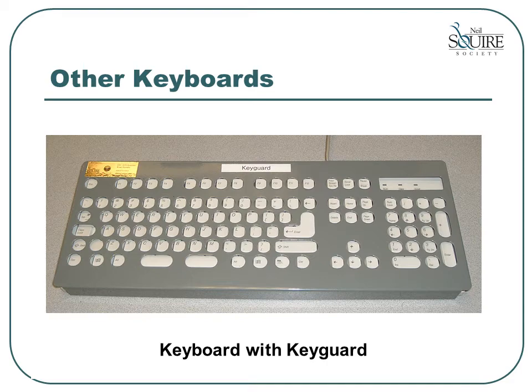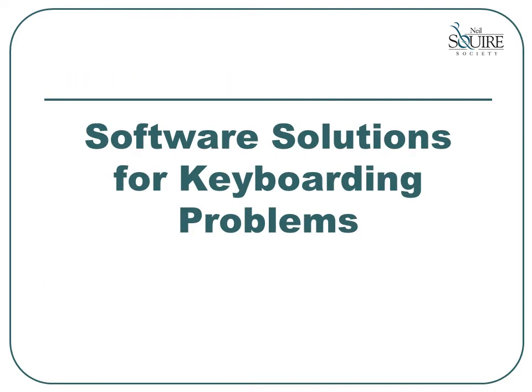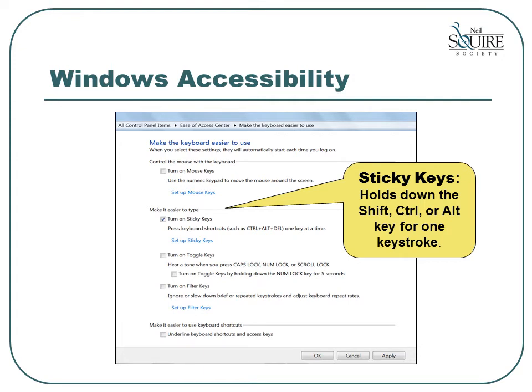That covers the general categories for assistive technology keyboards. Next we'll look at some of the software solutions for keyboarding problems, starting with the options available as part of the Windows operating system, called the accessibility properties. The first option is sticky keys. When this option is turned on, it enables you to type a capital letter through two separate keystrokes instead of having to hold down the shift key while pressing the letter key. This option works with the control and alt keys as well. Once turned on, you can press the shift key and release it, then press the letter key, and the computer will type a capital letter and automatically switch back to lowercase. This option was initially designed for people who type with one hand, but is useful for many others as it reduces the strain on your little finger.